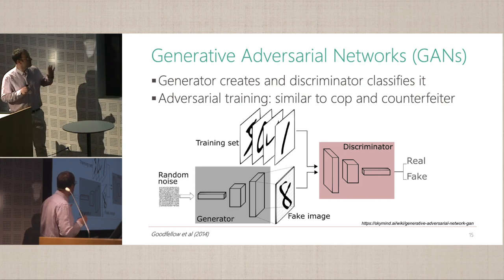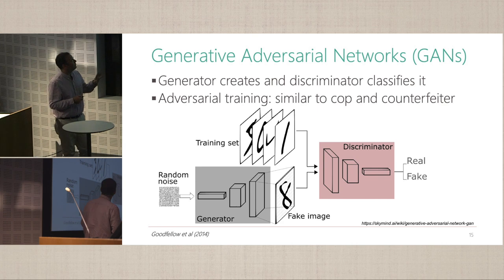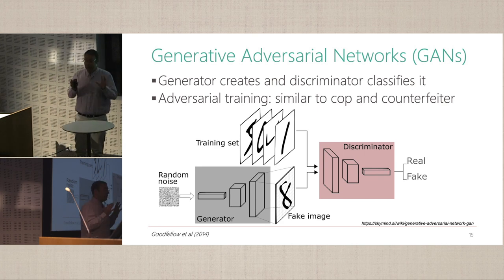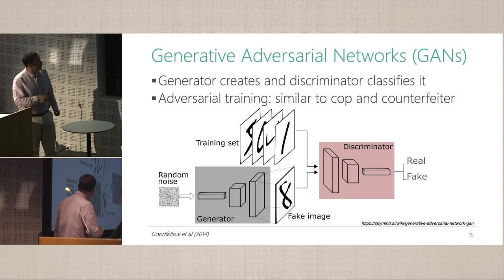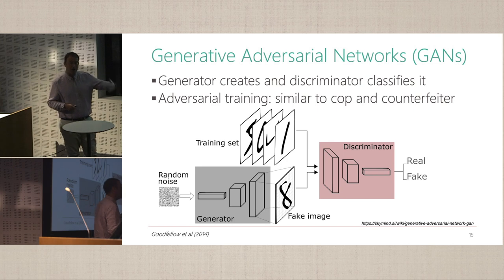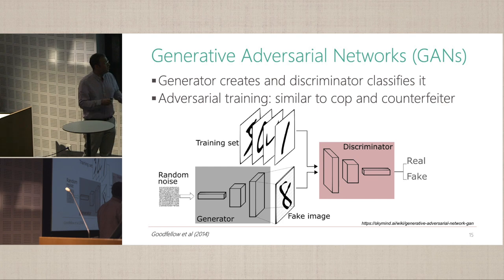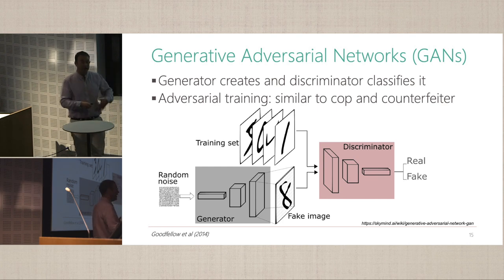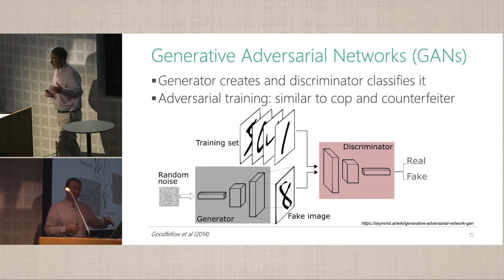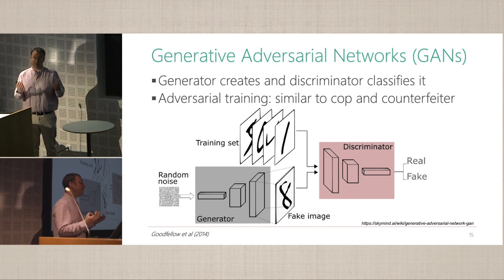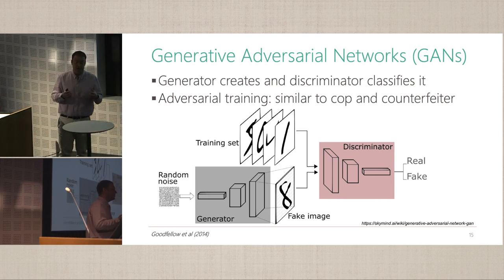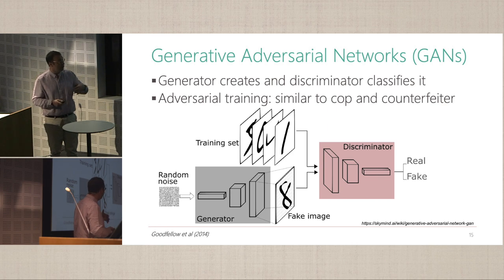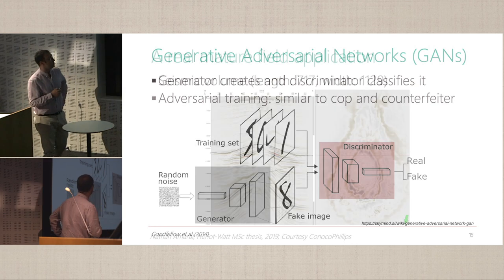Generative adversarial networks have this unique feature: they have two competitive learners. One generates fake images and learns to become better and better at generating them. The other — the discriminator — discriminates fake from real images using the training data and improves through learning. This competitive character is able to create a situation to find more flexible prediction scenarios.